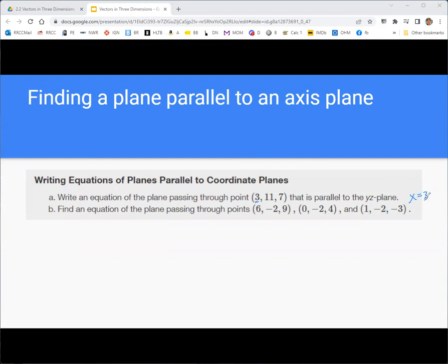How about an equation of a plane passing through those three points? You should have noticed that all three points have the same y value, negative 2, and so it should be y equals negative 2.